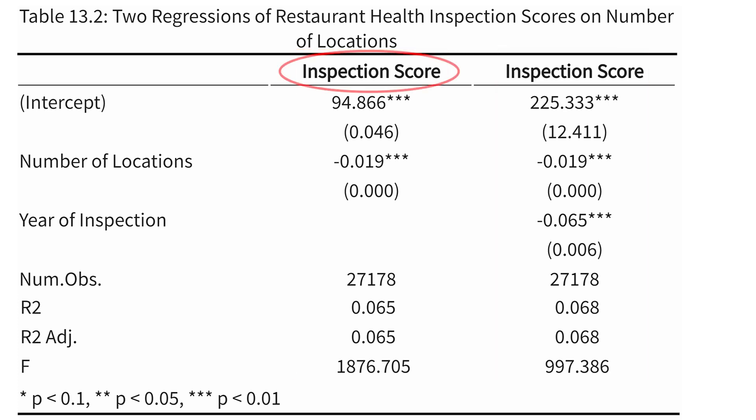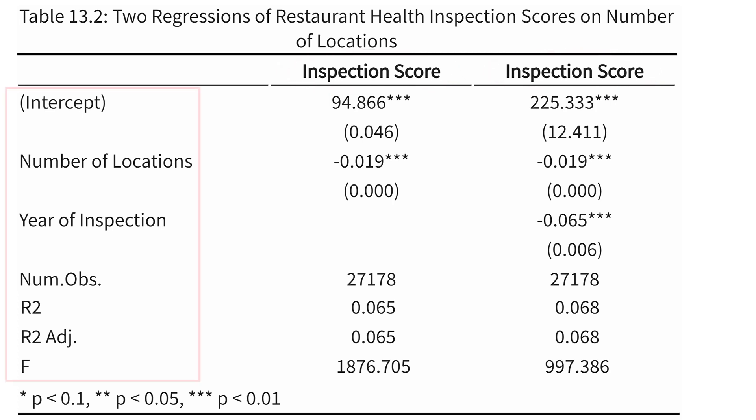Along the top, you can see that I've listed what the dependent variables are — what I am predicting, my Y variable in my model. In this case, both columns use inspection scores from restaurants, so health inspection scores. In the first column, you can see the names of the variables that I am using as predictors.